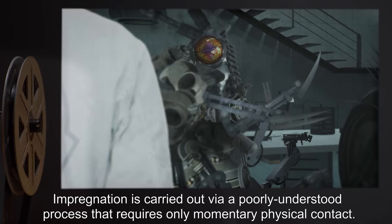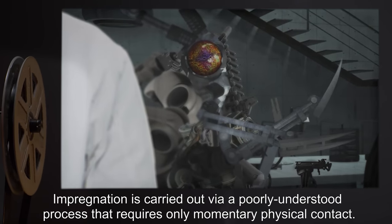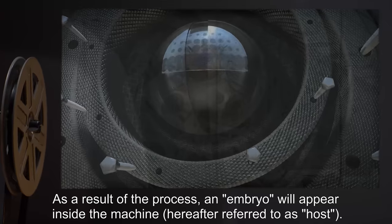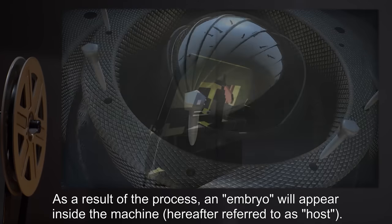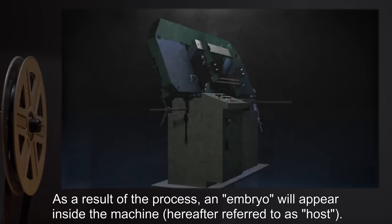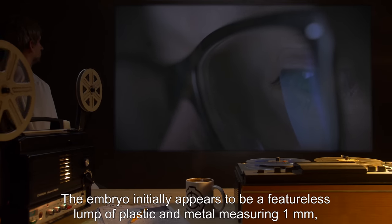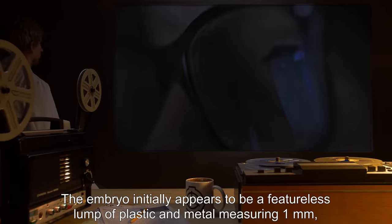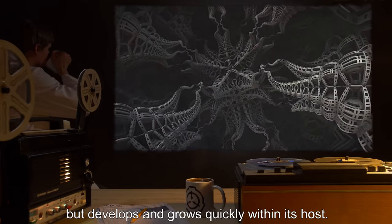Impregnation is carried out via a poorly understood process that requires only momentary physical contact. As a result of the process, an embryo will appear inside the machine, hereafter referred to as host. The embryo initially appears to be a featureless lump of plastic and metal, measuring one millimeter, but develops and grows quickly within its host.